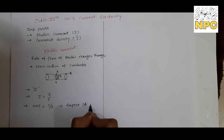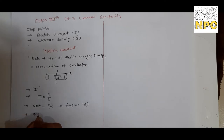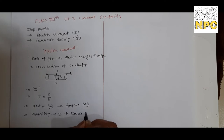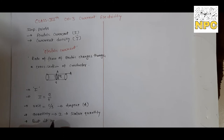There was a scientist named Ampere, and the unit of electric current is named after him - Ampere, denoted by capital A. Now regarding quantity: electric current is a scalar quantity. Electric current I is a scalar quantity, but it has a direction - it has a particular direction.